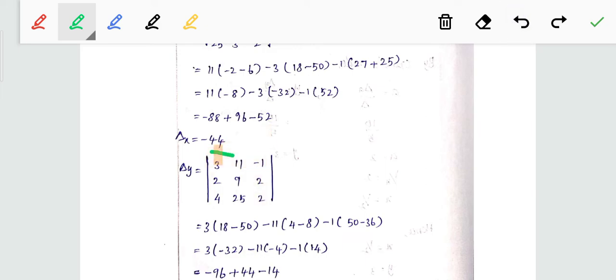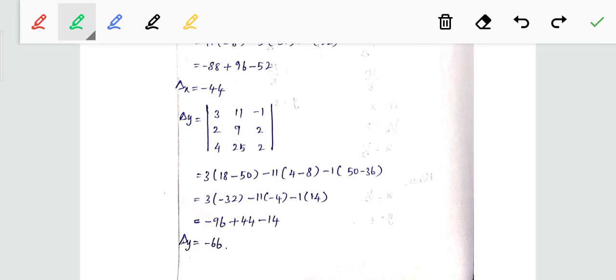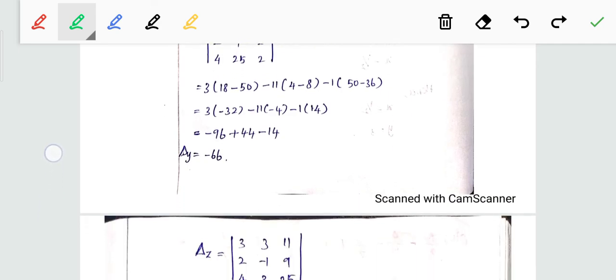18 minus 50 is minus 32, 4 minus 8 is minus 4, 50 minus 36 is 14. So 3 into minus 32 is minus 96, minus 11 into minus 4 is plus 44, minus 1 into 14 is minus 14. So minus 96, minus 46.